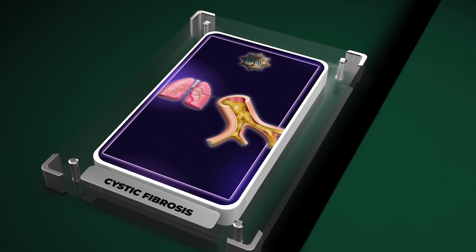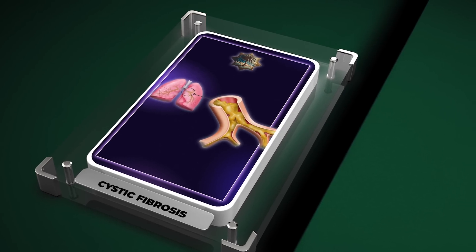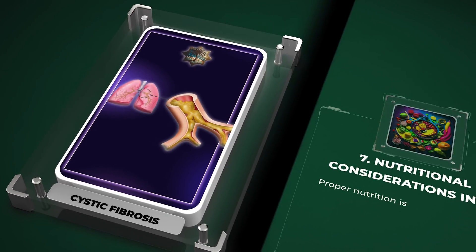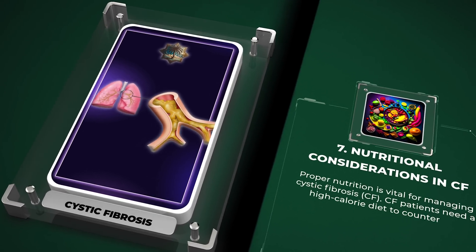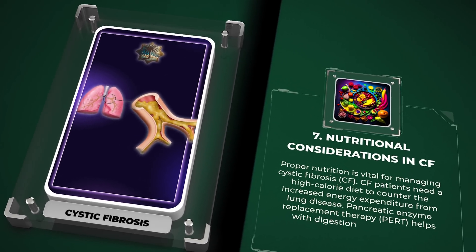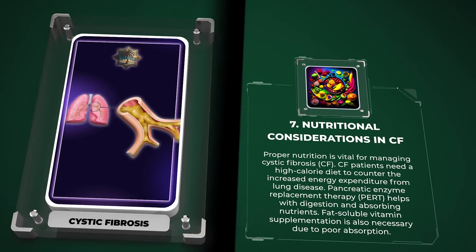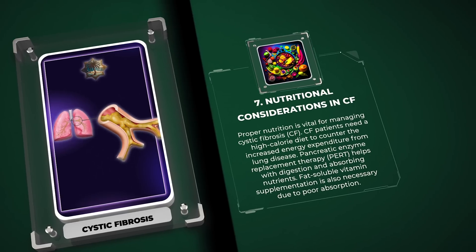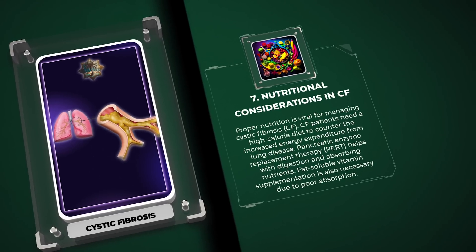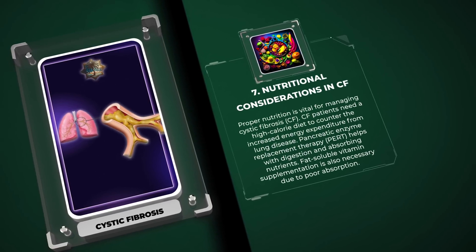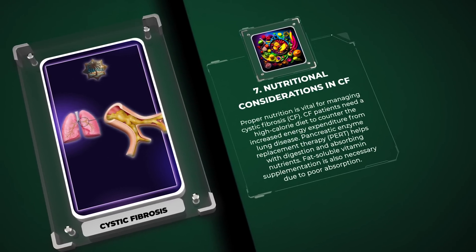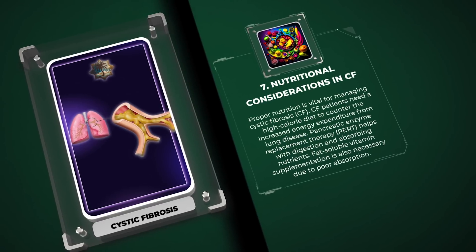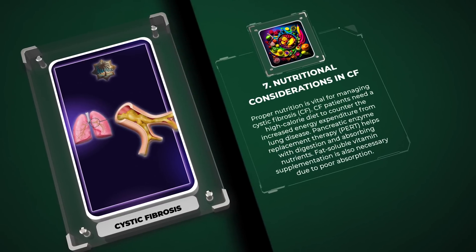Proper nutrition is vital for managing cystic fibrosis. CF patients need a high-calorie diet to counter the increased energy expenditure from lung disease. Pancreatic enzyme replacement therapy (PERT) helps with digestion and absorbing nutrients. Fat-soluble vitamin supplementation is also necessary due to poor absorption.